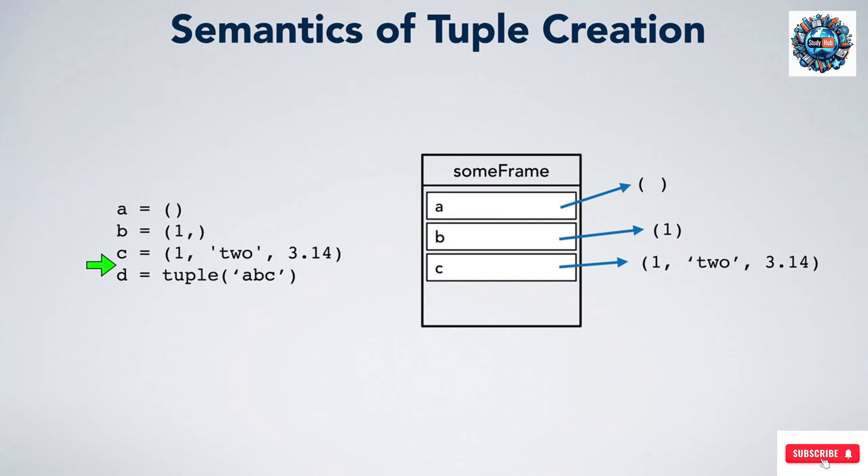We then assign C to a three element tuple. We write that in the heap with the three elements in parentheses. As we mentioned, this call to tuple will split ABC into the letters inside it and make a tuple from those. So we would put that three element tuple in the heap and point an arrow at it.